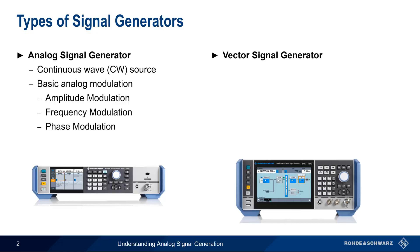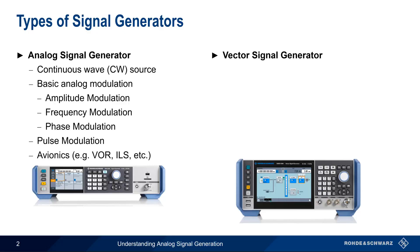In addition, many analog signal generators can also create basic unmodulated RF pulses. And there are also a few special types of purely analog modulation, such as some of the avionics standards, that can be generated using an analog signal generator.